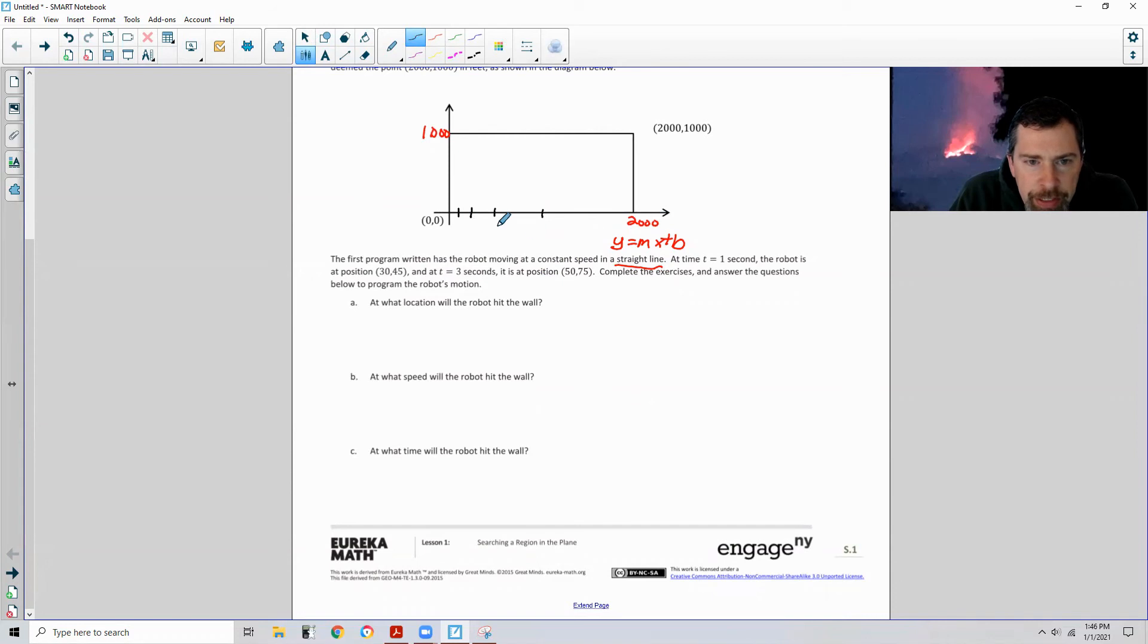So for starters we need to get a visual as to where this is. This is 2,000, this is about 1,000 here, this is about 500, 250, 125. Just to get an idea we're breaking this down. At position (30, 45), we want to go out to 30 and then 45. So we're way down here at the point (30, 45). That's at t equals one second. T equals three seconds, two seconds later, it's at position (50, 75). So it hasn't gone very far. They're both right about there.